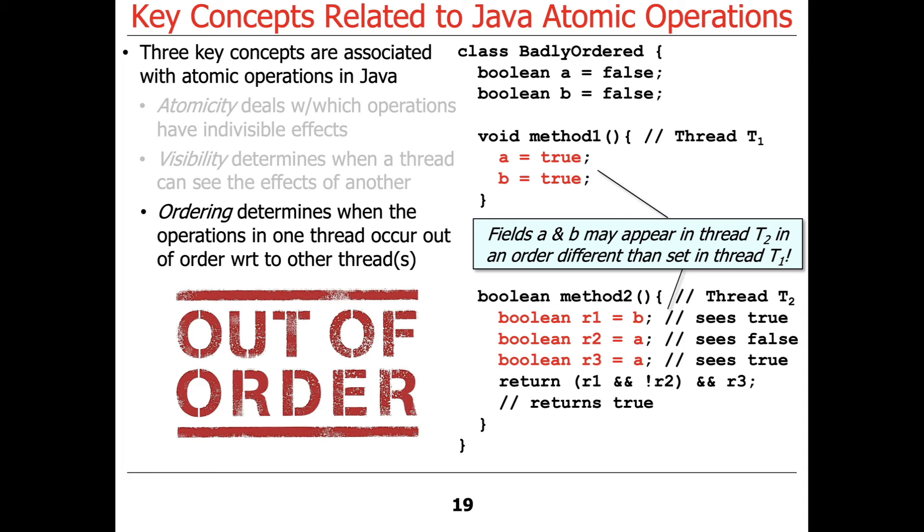because of out of ordering operations handled at the virtual machine and optimizer level, assembly language level and processor core level, you know, the many different levels that we see here. It could very well be that B is set to true, remember that came after, but A is still false. And then it could be the case that if you read it again, it would be true.